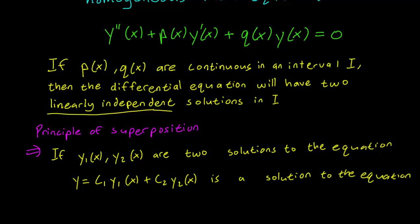But it turns out that this expression c1*y1 plus c2*y2 is only the general solution when y1 and y2 are linearly independent. So if y1 and y2 are two linearly independent solutions to the equation, only then can we assert that this expression c1*y1 plus c2*y2 is the general solution to the differential equation.